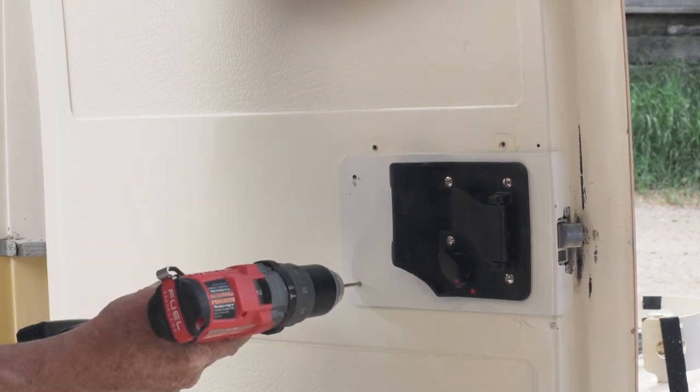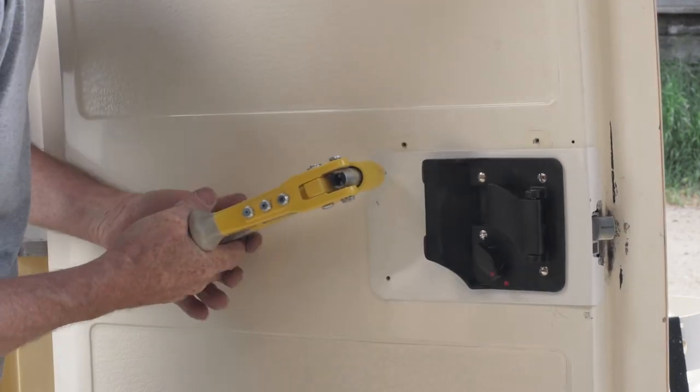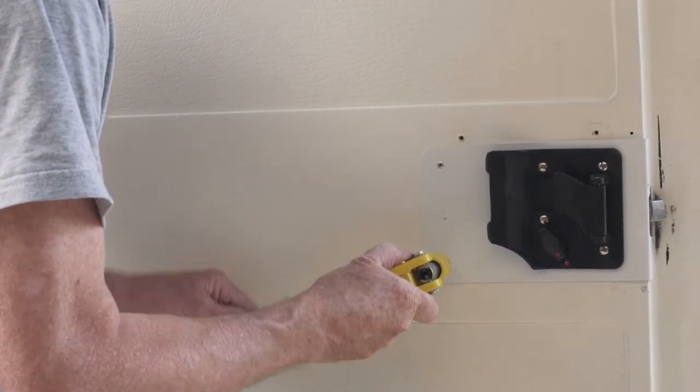Attach the inner aluminum plate by drilling the two 1 1⁄8 inch holes on the plate and install pop rivets.